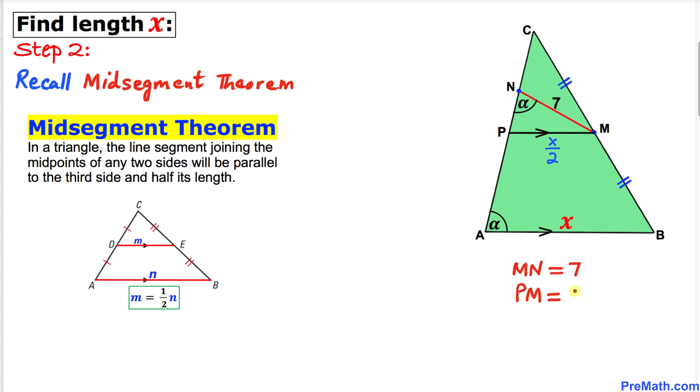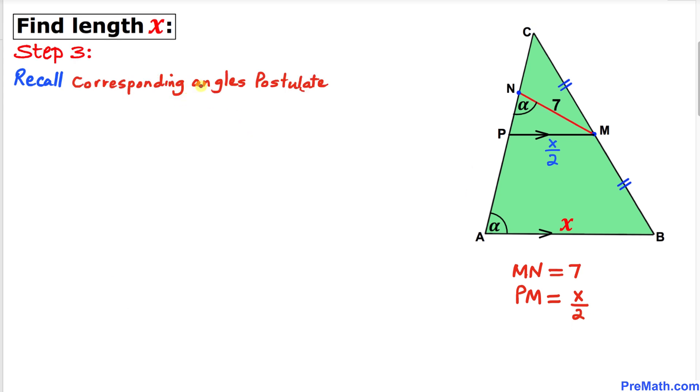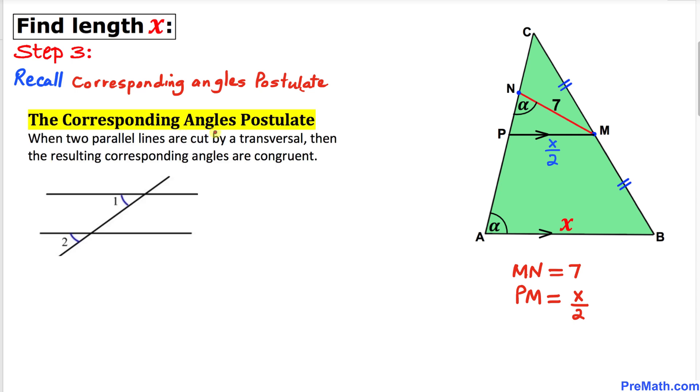Now let's recall the Corresponding Angles Postulate. When two parallel lines are cut by a transversal, then the resulting corresponding angles are congruent.